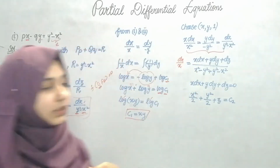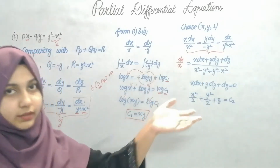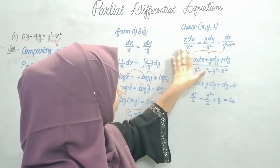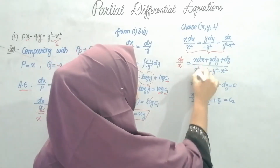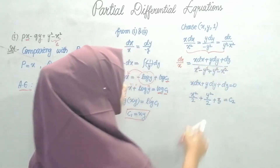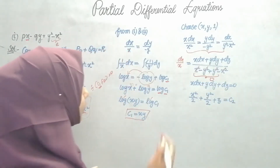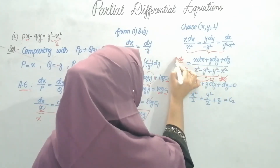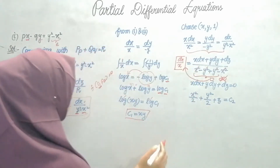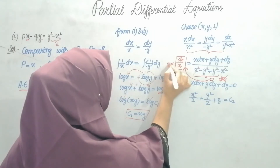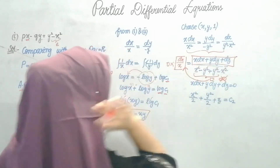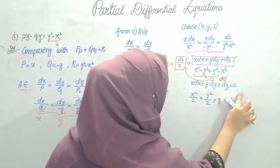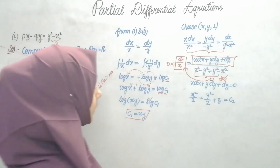The denominator simplifies: plus x squared minus x squared cancels, and minus y squared plus y squared cancels, giving zero. So the denominator is zero. Sending zero to the other side, the numerator must also equal zero: x·dx plus y·dy plus dz equals zero.